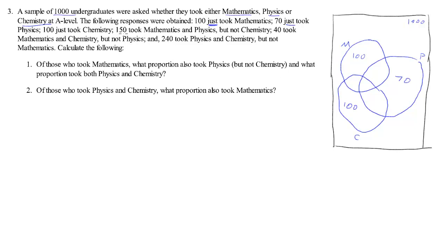And then we have a hundred and fifty who took maths and physics but no chemistry. So maths and physics but no chemistry. That 150 is here. Forty who took maths and chemistry but no physics. So maths and chemistry but no physics. 40 goes in here. 240 took physics and chemistry but no maths.